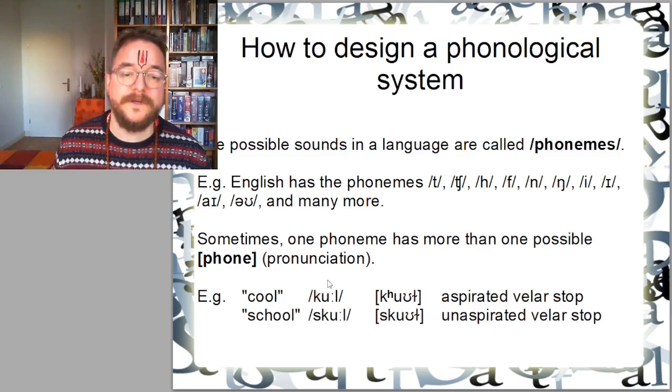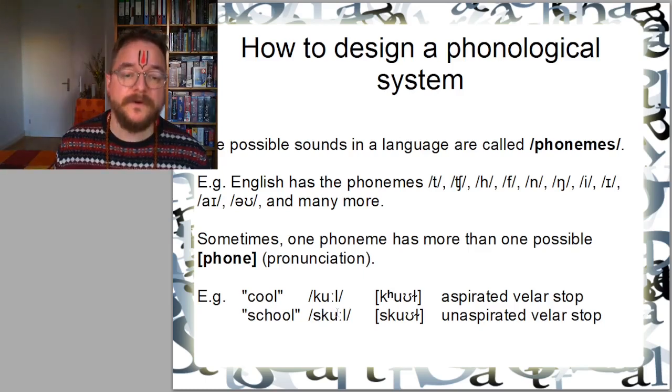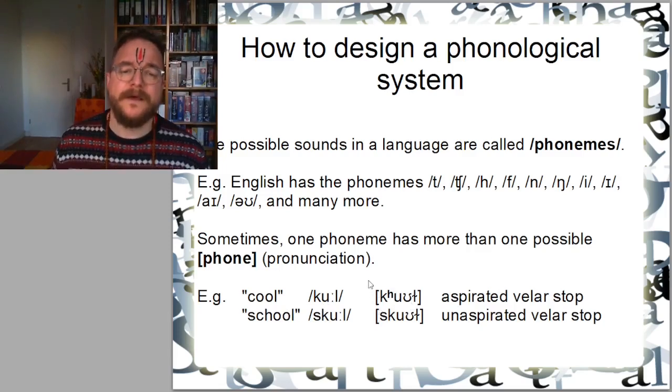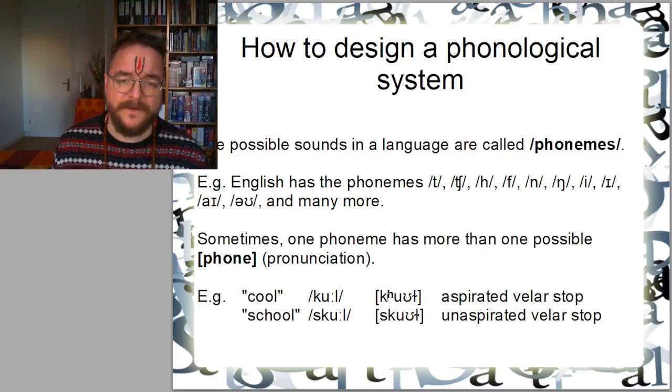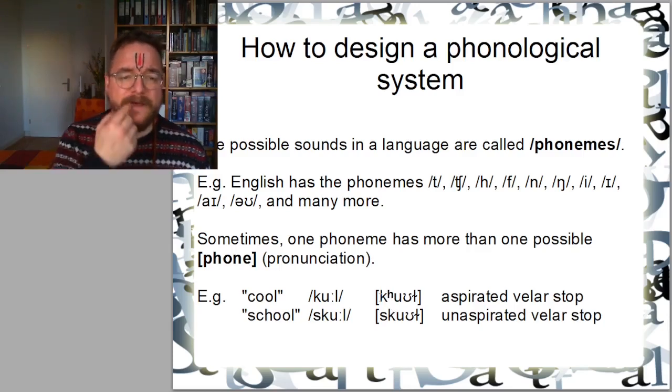The word cool is actually composed of three phonemes K, U and L. The word school is composed of the phonemes S, K, U and L. What is the difference between the first K and the second K? The first K is aspirated. The second one in school is not aspirated. There is a push of air coming out after cool but not after the K in school.